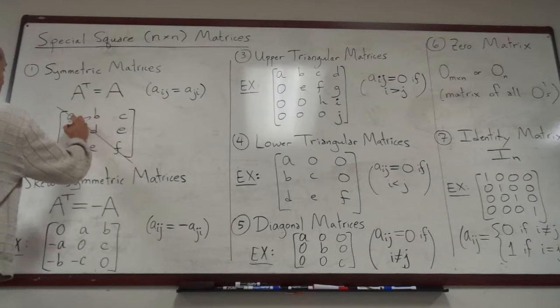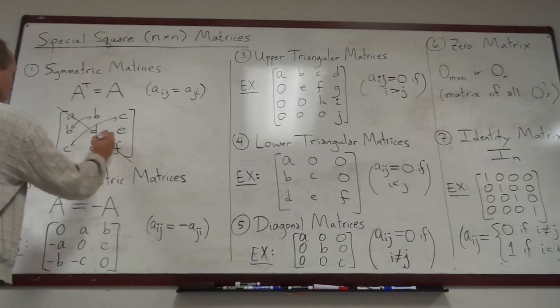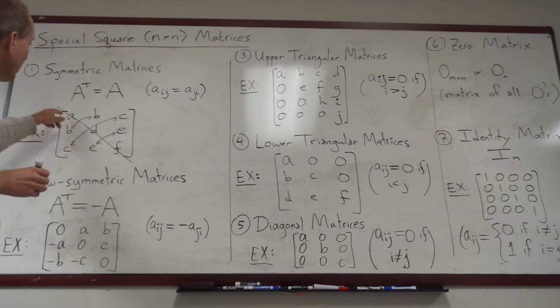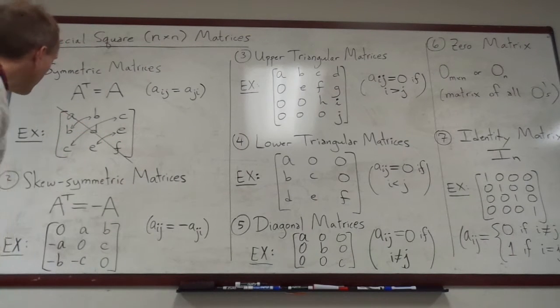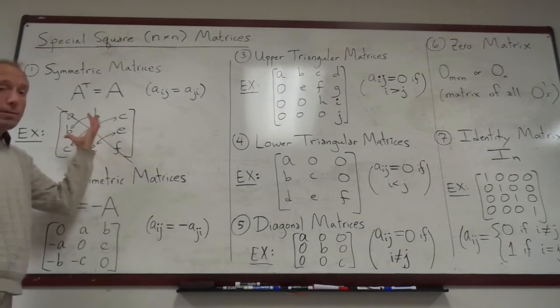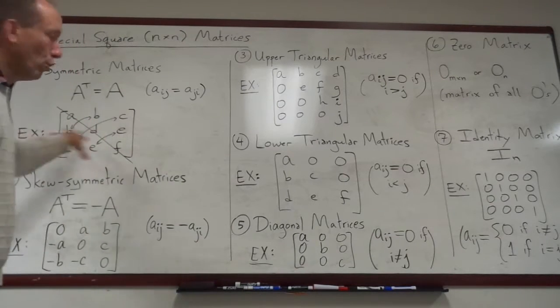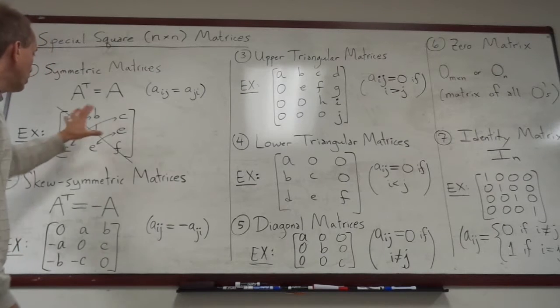The idea is that across this main diagonal, which we called it, everything reflects and it looks kind of like a mirror. So the b's, the c's, and the e's reflect across the main diagonal. a, d, and f can be whatever. Okay. And this is just a three by three. Of course, it could be four by four, five by five, and you might need more letters to describe it. But this is just an example.